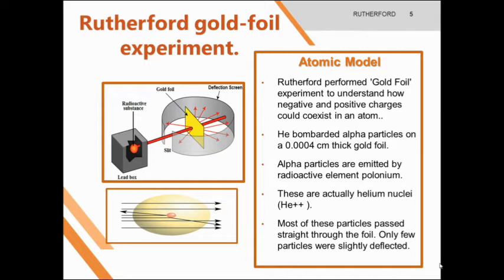These alpha particles are actually polonium nuclei — doubly positively charged. Most of these particles passed straight through the foil; only a few particles were slightly deflected. Observe this diagram: he used a box, inside which he placed a radioactive substance. In front of this box, where radioactive rays were released, he placed the gold foil. Around the gold foil, he placed the deflection screen, where he observed the activity of the radioactive rays.